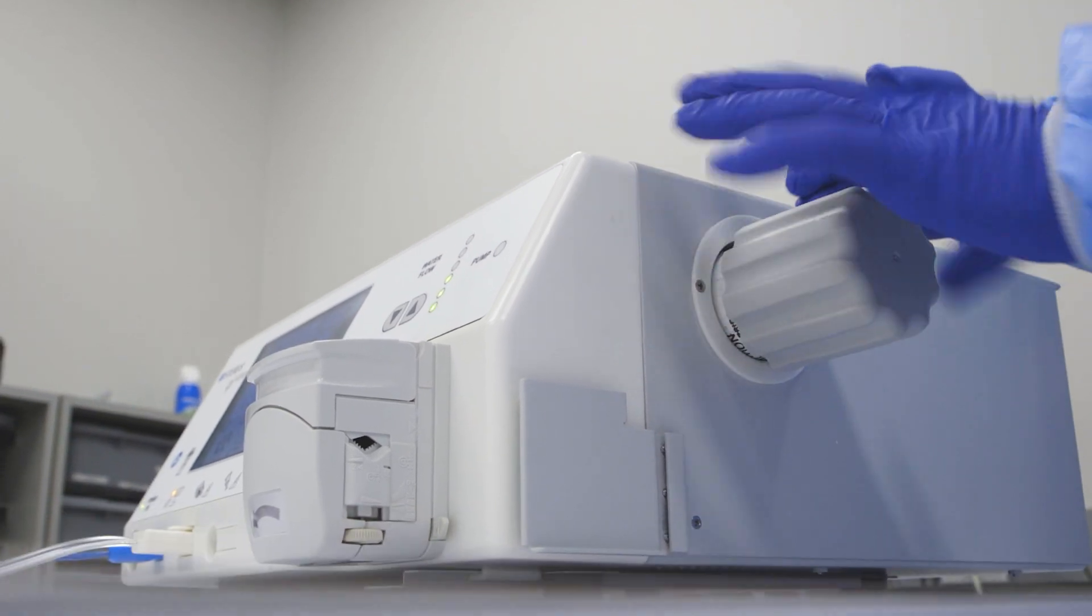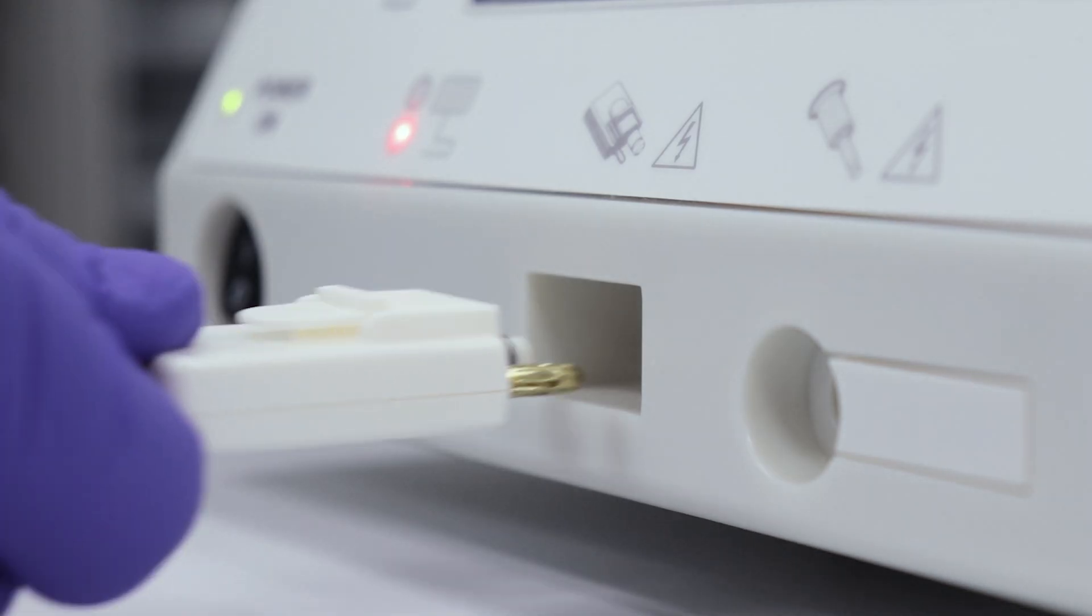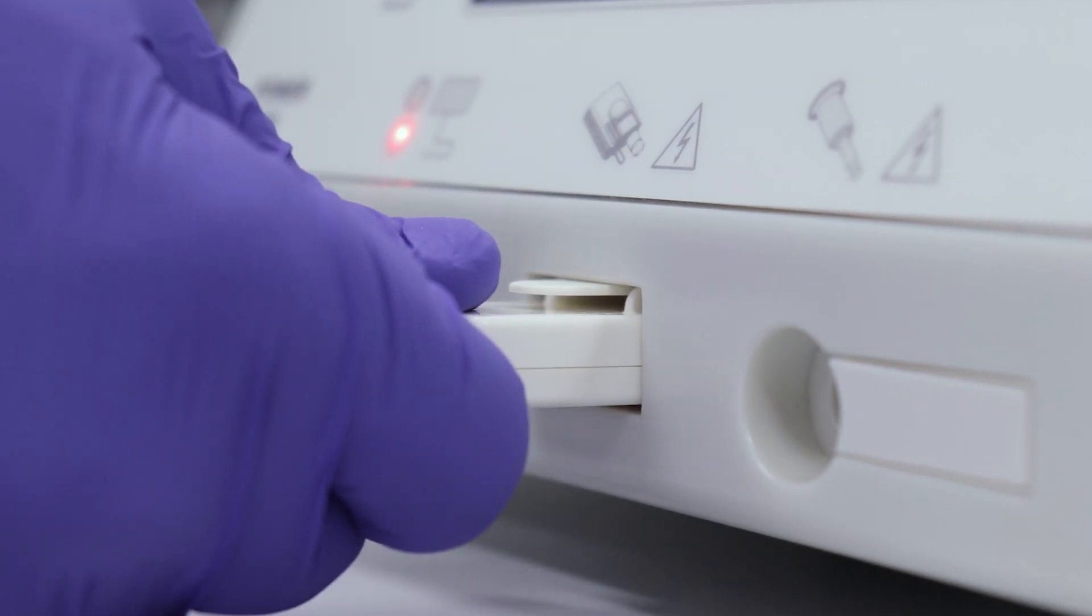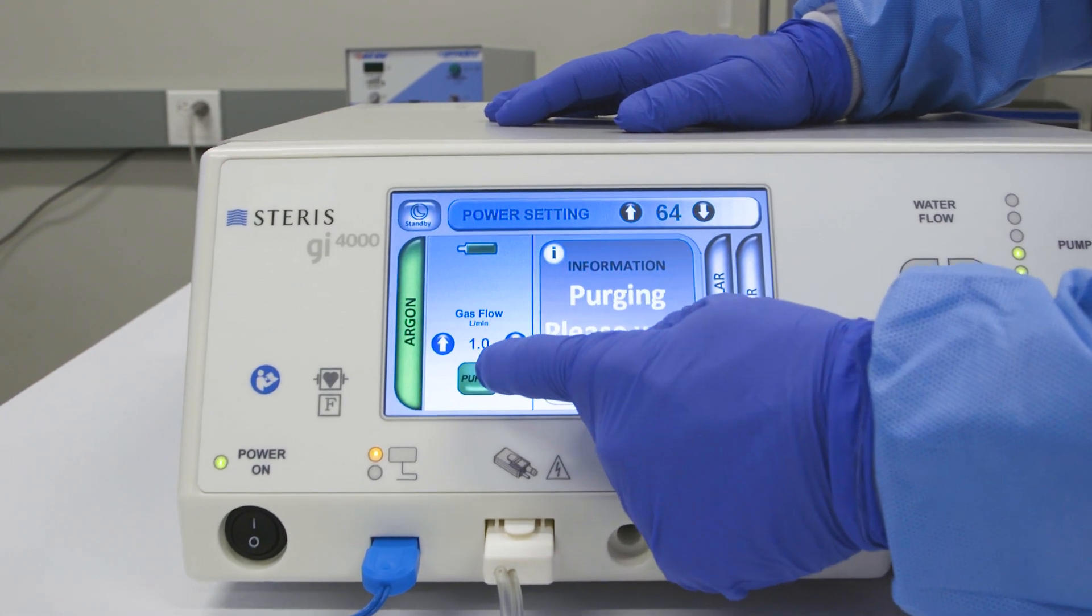Once the new argon gas bottle has been installed, you may reconnect the ArcConnect to the receptacle and re-pressurize the argon gas line by purging.